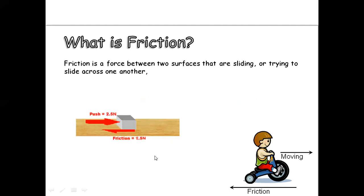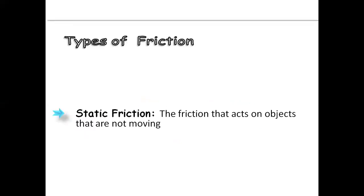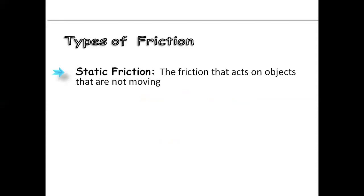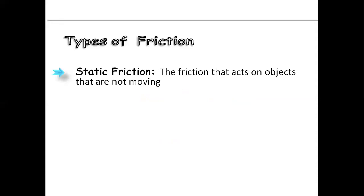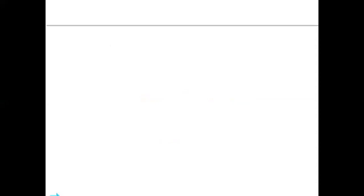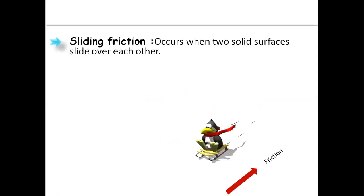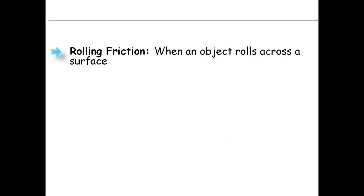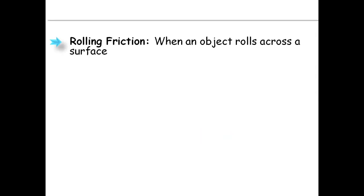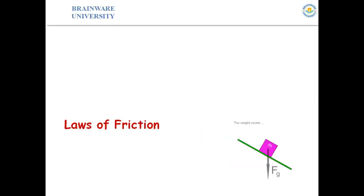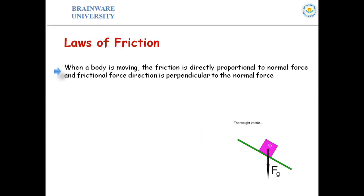Types of friction: one is static friction and the other is dynamic friction. Dynamic friction has two types — sliding friction, which occurs when a body slides between two solid surfaces, and rolling friction, which occurs when an object is rolled across a surface.